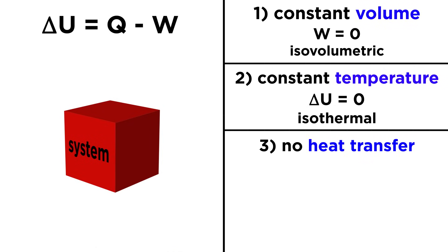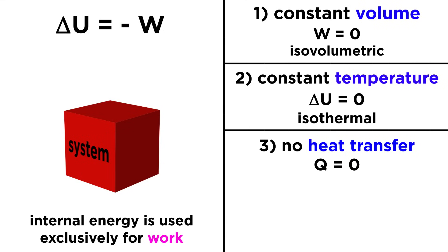If there is no heat transfer, Q will be zero, and delta U will equal negative W. This means that the internal energy of a system changes as a result of doing work on its surroundings, or the surroundings doing work upon the system. Such a process will be called an adiabatic process, meaning no heat transfer.